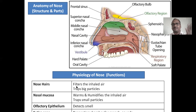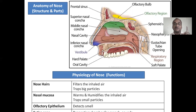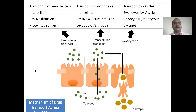Physiology — highlighted points only. Nose hairs: filter the inhaled air and trap bigger particles. Nasal mucosa: warms the air, provides moisture, humidifies the entire air, and traps very small particles. Olfactory epithelium: detects smell. The entire nose acts as a resonating chamber for speech and sound.